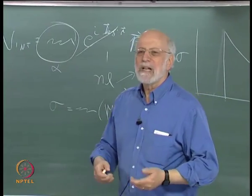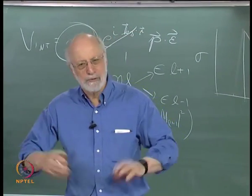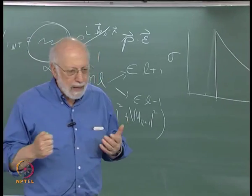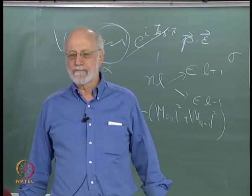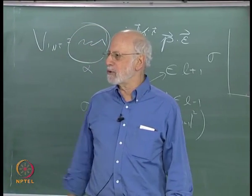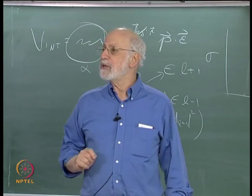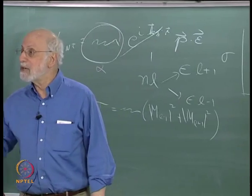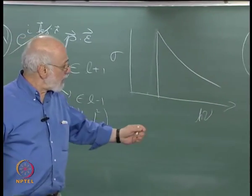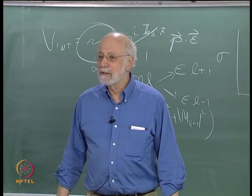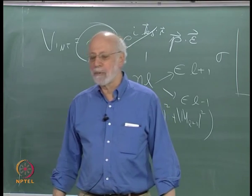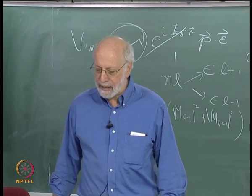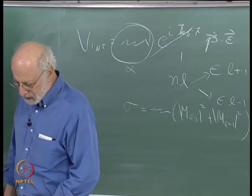The Schrödinger equation, treating this essentially non-relativistically, is a partial differential equation. We fundamentally know two ways of solving partial differential equations exactly: separation of variables, and guessing. If you can't do either of those two, you have to use approximations. For more than one electron, we know no way of achieving separation of variables — maybe there's some coordinate system nobody's figured out yet — so one has to use various kinds of approximations.